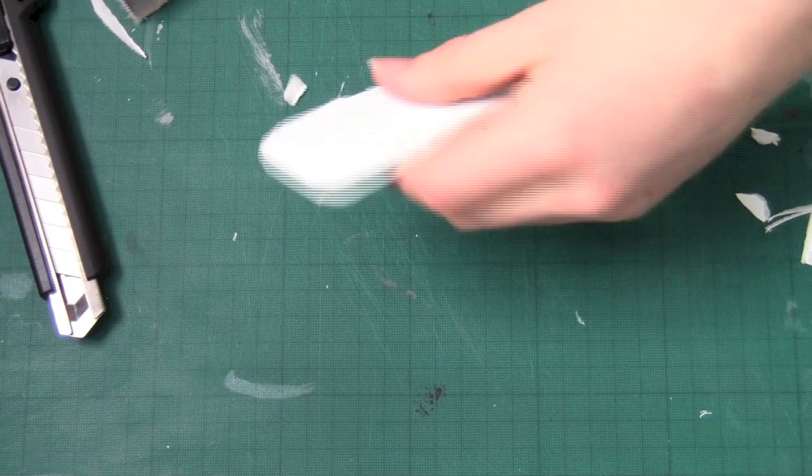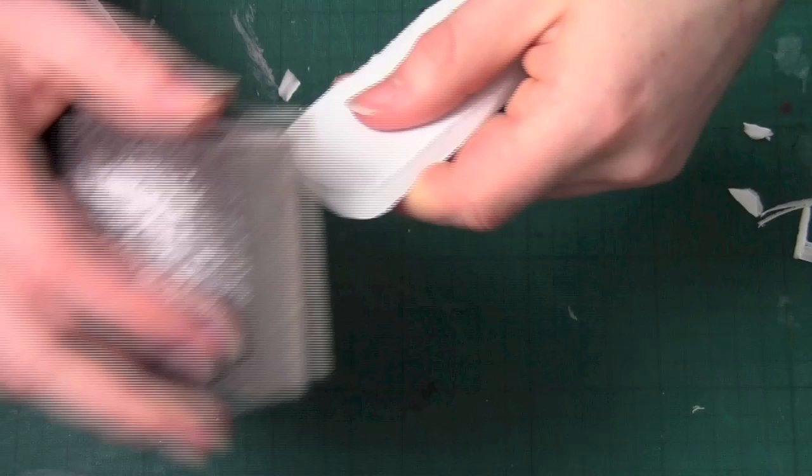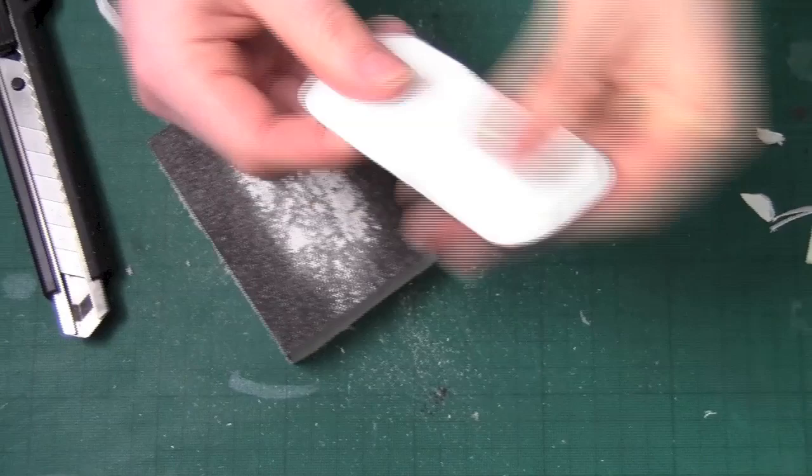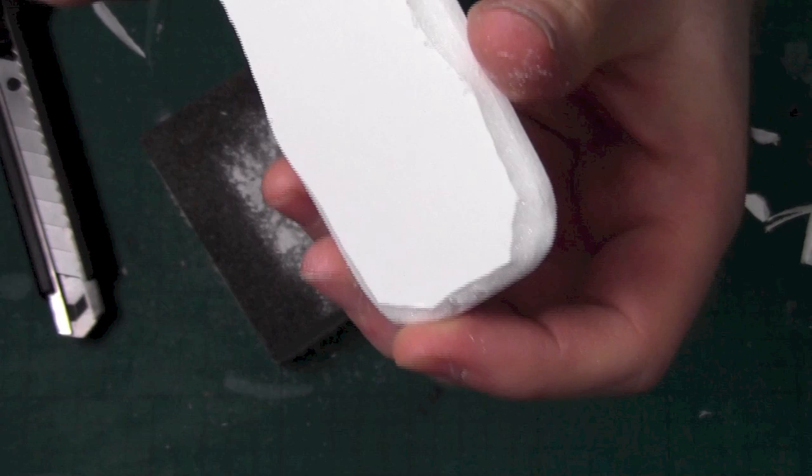Now that we have made the base, we are just going to smooth it off by using a sanding block. Just go around each edge which will make it nice and smooth and less rough. Once you are happy with how smooth the edges are and the way it looks, just clean off your desk ready for the next step.